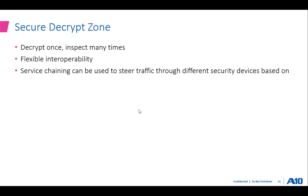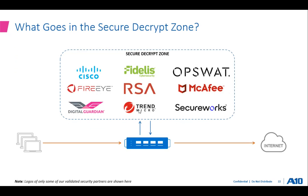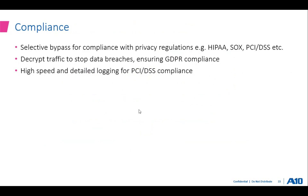What goes into the secure decrypt zone? These are logos of some of our validated security partners. You can have firewalls like Cisco, sandboxing devices like FireEye, endpoint or server security solutions like Trend Micro, Fidelis, McAfee, and so on — these are some examples of devices that work within the secure decrypt zone.